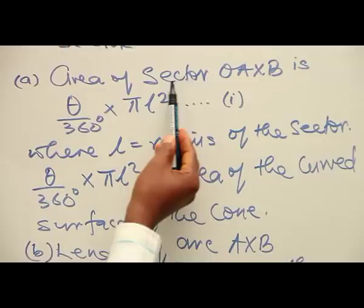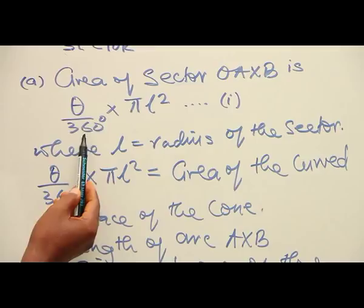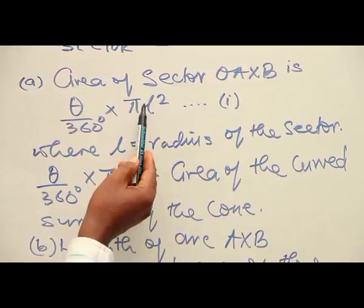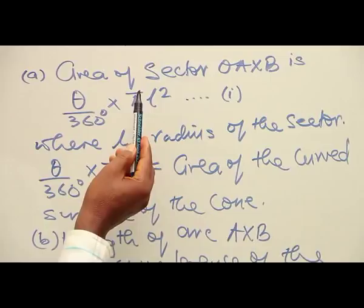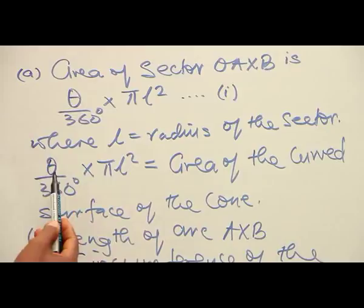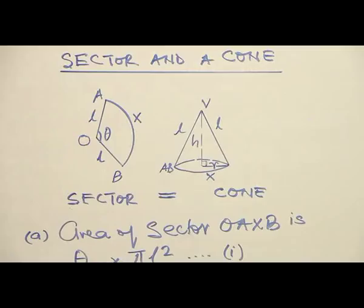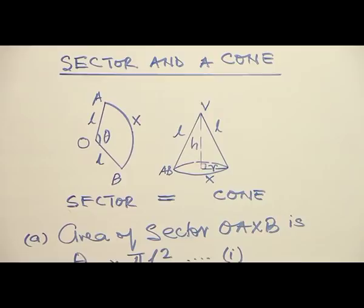Now we are going to look at the area of sector OASB. The area of sector OASB is calculated using the formula: theta over 360 degrees times pi L squared. We use L squared because L represents the radius of the sector. Observe that theta over 360 degrees times pi L squared is also equal to the area of the curved surface of the cone — the body that was folded from the sector gives you the curved surface area of the cone.